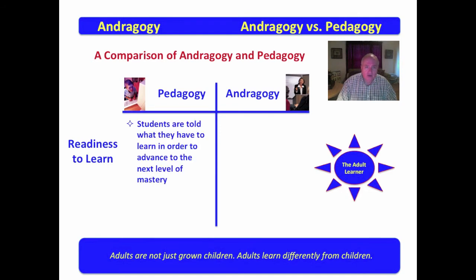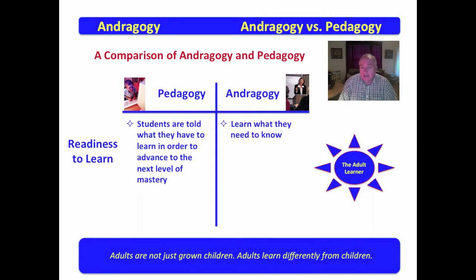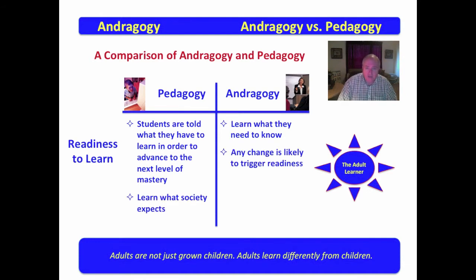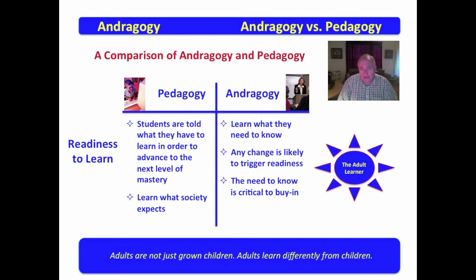In the readiness to learn, in pedagogy, students are told what they have to learn in order to advance to the next level of mastery. In andragogy, students are very prone to learn what they need to know. In pedagogy, they learn what society expects. But for adults, any change is likely to trigger their readiness to learn, and they need to know why they're learning what they're learning and how it relates to them.